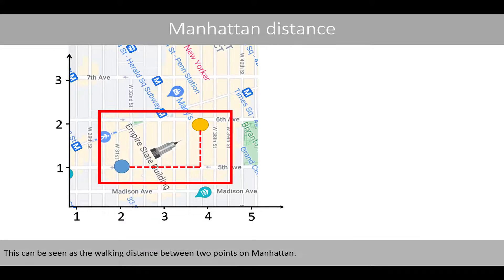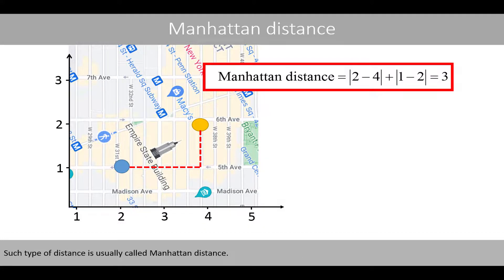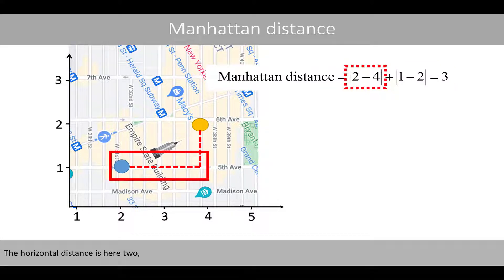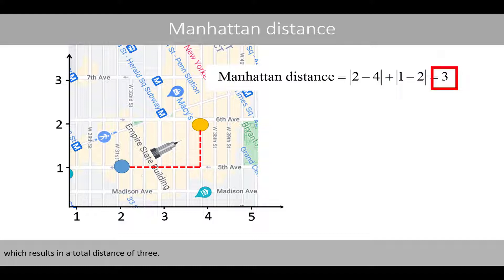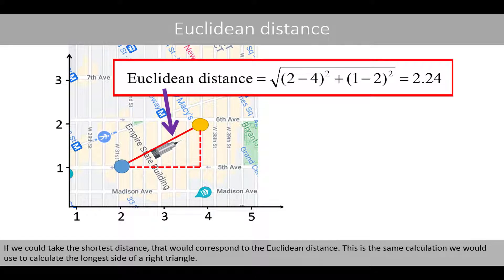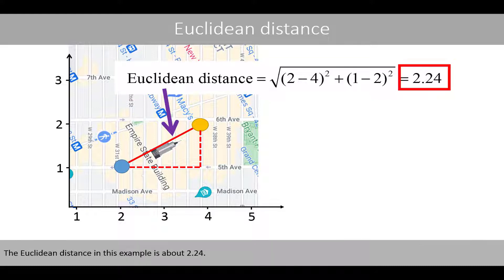One way to calculate the distance between two data points is to sum the horizontal and vertical distances between them. This can be seen as the walking distance between two points in Manhattan, and is therefore usually called Manhattan distance. The horizontal distance is 2 and the vertical distance is 1, which results in a total distance of 3. If we could take the shortest distance, that would correspond to the Euclidean distance — the same calculation we would use to calculate the longest side of a right triangle. The Euclidean distance in this example is about 2.24.